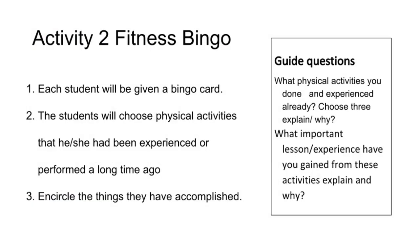Directions: Each student will be given a bingo card. The students will choose physical activities that they have experienced or performed a long time ago and encircle the things they have accomplished. Guide questions: What physical activities have you done and experienced already? Choose three and explain why. What important lessons or experiences have you gained from these activities? Explain and why. When they are done, the students will answer the guide questions.